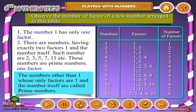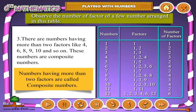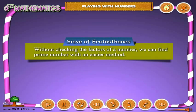The numbers other than one whose only factors are one and the number itself are called prime numbers. There are also numbers having more than two factors, like four, six, eight, nine, ten, and so on. These numbers are composite numbers. Numbers having more than two factors are called composite numbers.